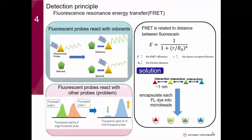When an odorant comes close to a fluorescent probe, because of the fluorescence mechanism, the odorant will enhance or quench the fluorescence intensity of the fluorescent dye. This is what we want, but unwanted interaction also happens when two fluorescent probes come together — one intensity will go down and the other will increase.